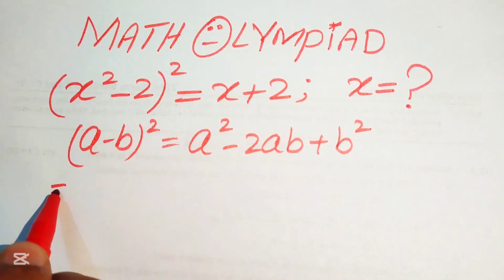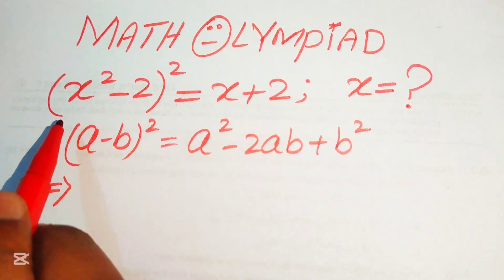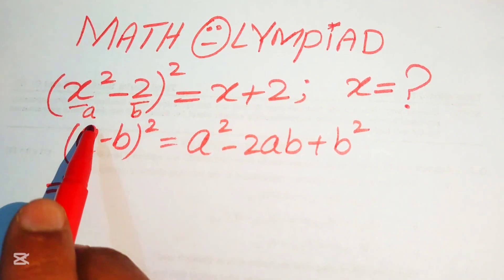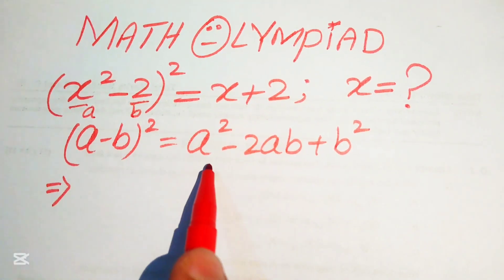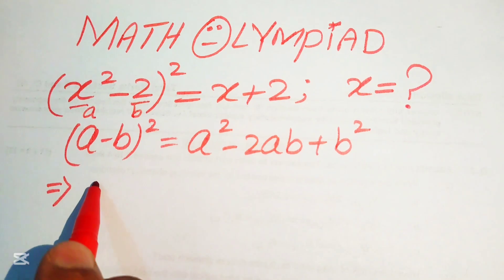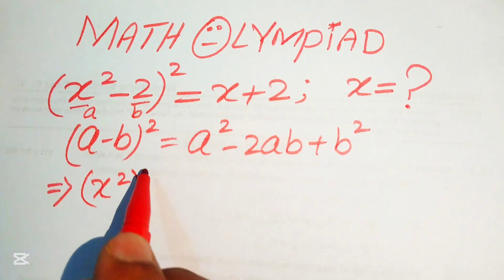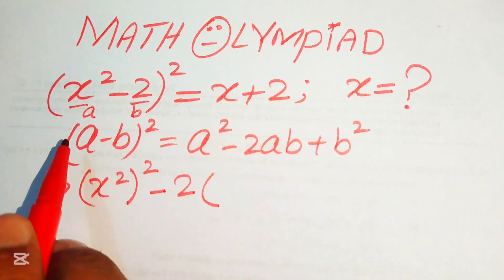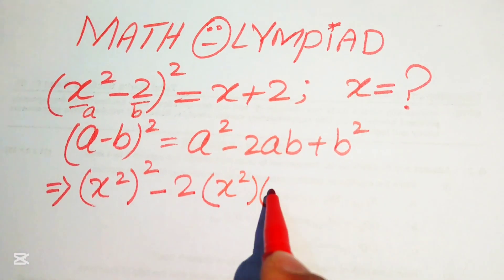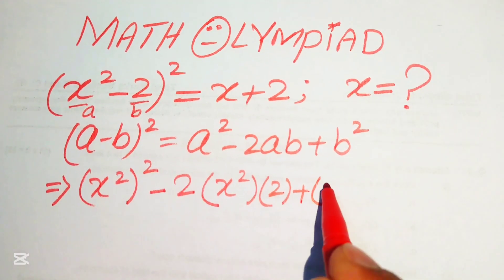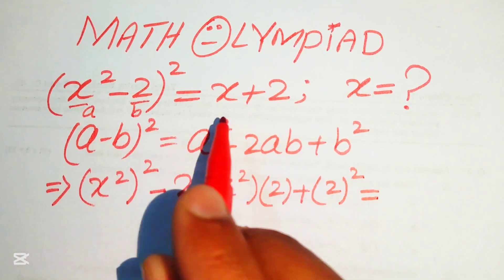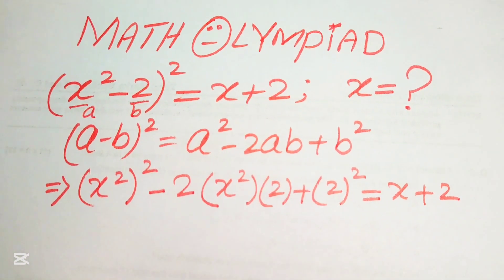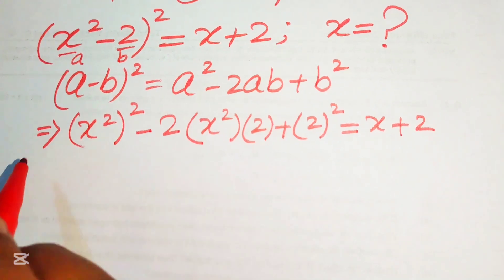According to this, we write the left hand side of the equation. Here our a is x² and our b is 2. Substituting these values we get: (x²)² - 2·(x²)·2 + 2² = x + 2.